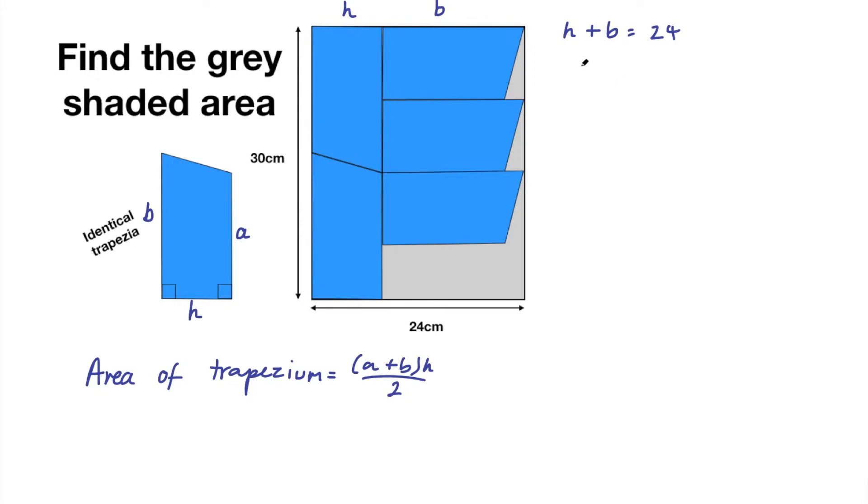Anyways we're going to say 2h equals b the long side of the trapezium and then a plus b equals 30. So a plus b equals 30. Okay they're the three equations we need in order to solve for a, b and h. Remember if you have three unknowns you need three equations in order to solve for those unknowns.